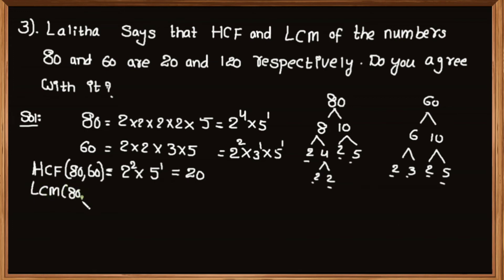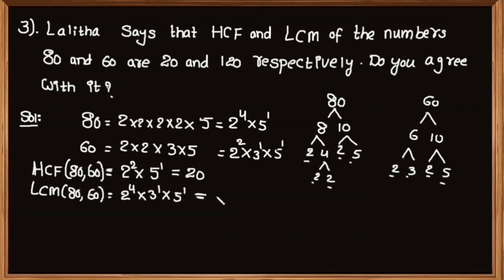The product of greatest powers of each prime factor is known as LCM. Here 2 to the power 4, 3 to the power 1 and 5 to the power 1 are the greatest powers of prime factors 2, 3 and 5. LCM of 80 and 60 is equal to 2 to the power 4 multiplied by 3 to the power 1 multiplied by 5 to the power 1.